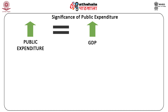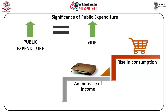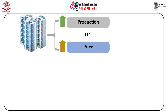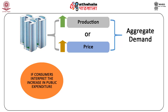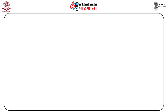Moreover, since income is an important determinant of consumption, an increase of income will be followed by a rise in consumption. The full extent of this mechanism will depend, however, on the reactions of the other economic agents. For instance, firms have to decide whether to increase production or prices in response to increase in aggregate demand. However, if consumers interpret the increase in public expenditure as a fall in their disposable income, that is, after-tax income, consumption may fall accordingly.